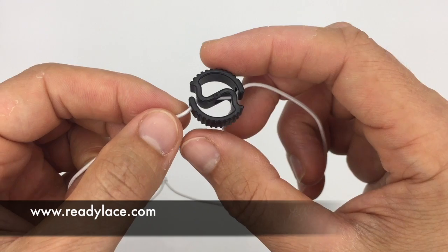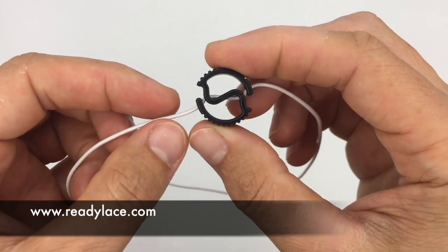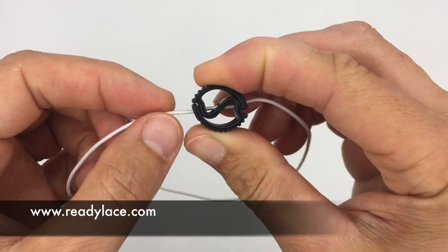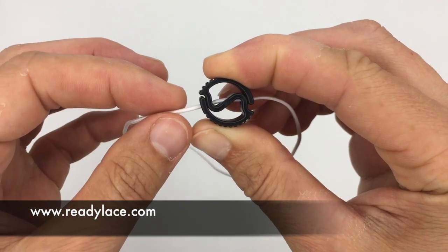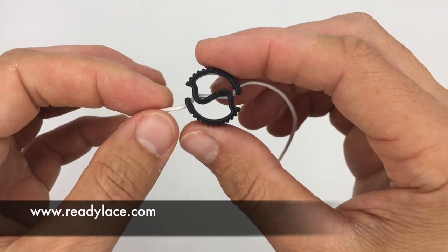If I press on either extremity of the cord stopper, like so, the holes inside the spiral system align and allow cords to slide in and out. If I stop pressing, the cord is blocked.